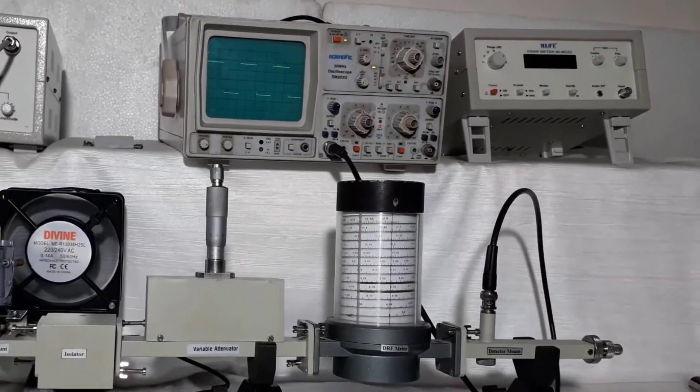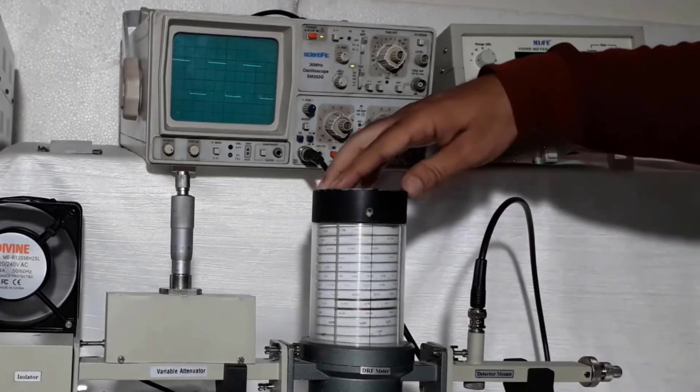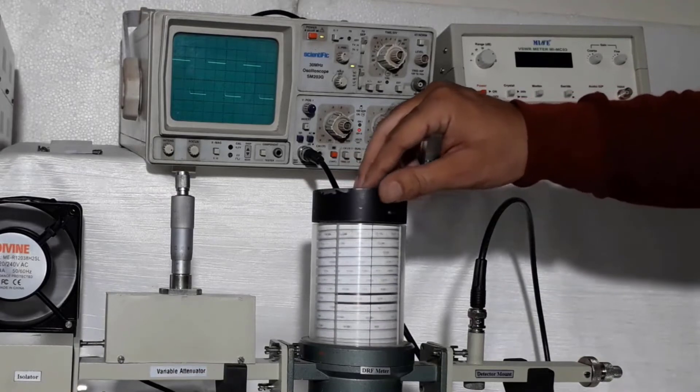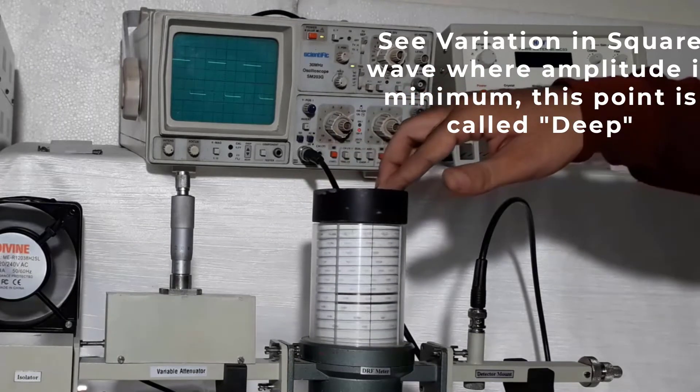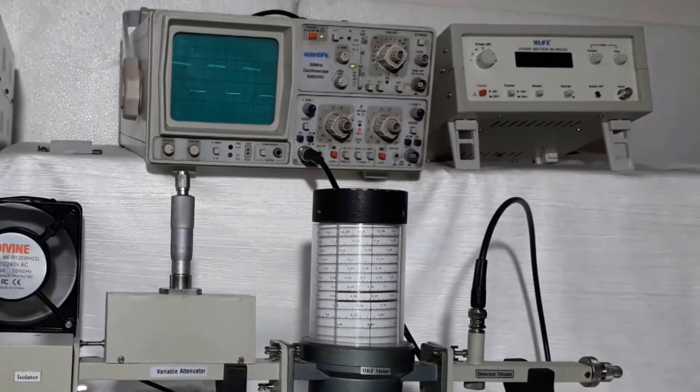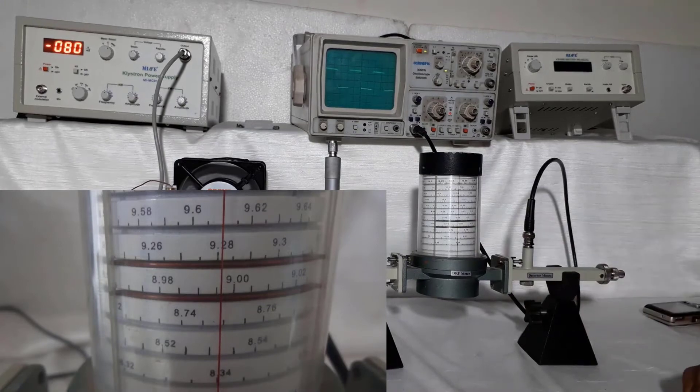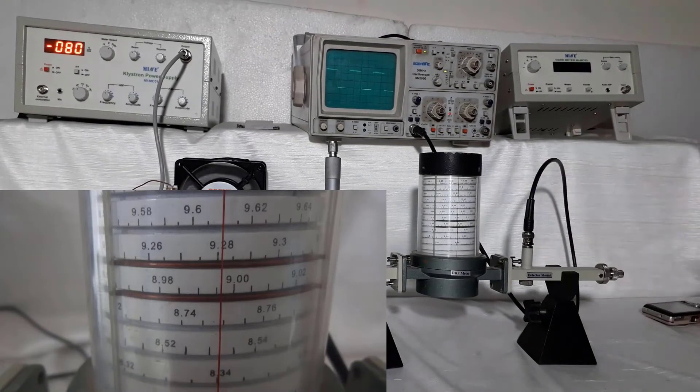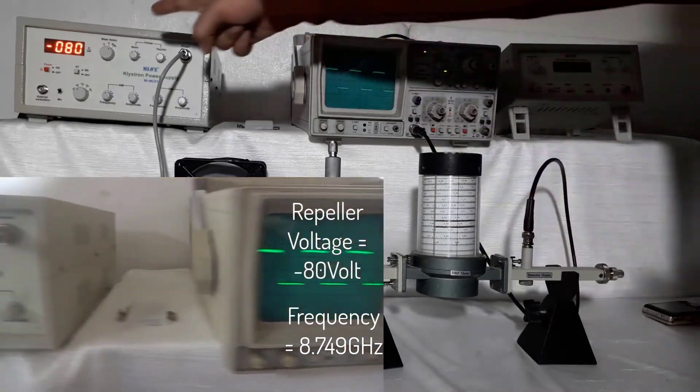To get good amount of output, use direct read frequency meter to get a dip on CRO, meaning the point where output is going minimum. At the point of dip, note down the frequency from DRF meter. This is your microwave frequency in gigahertz. Put down the value of frequency and repeller voltage. This is to be considered as the center point.